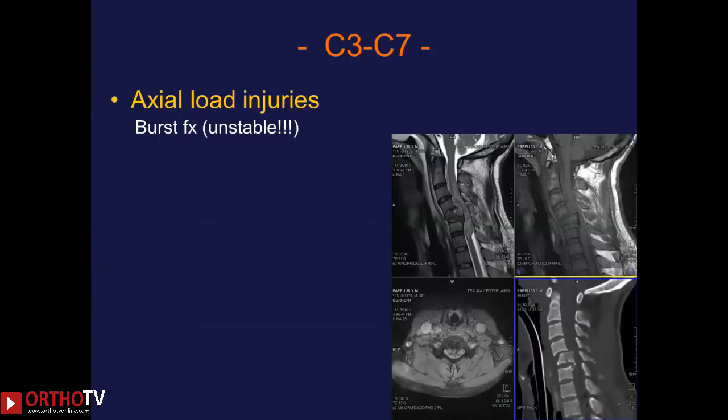Another common fracture occurs when hyperflexion is combined with axial loading of the vertebra, causing a burst fracture. As commonly seen in the thoracic and lumbar spine, there is shattering of the vertebral body and retropulsion can occur, with potential damage to the cord.